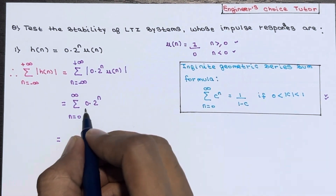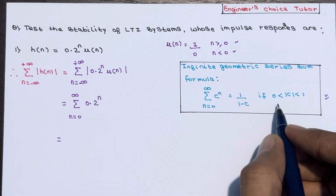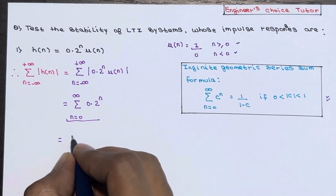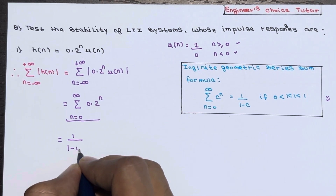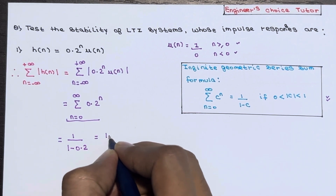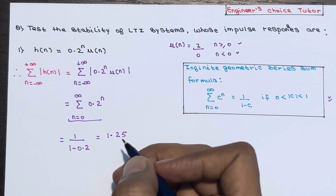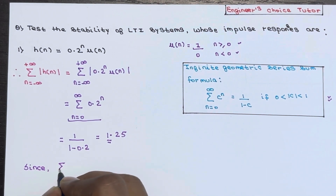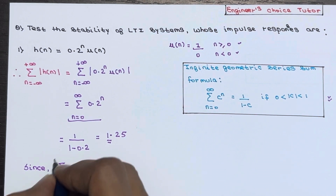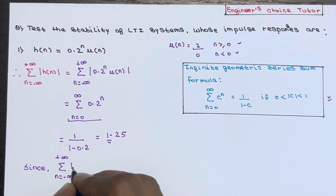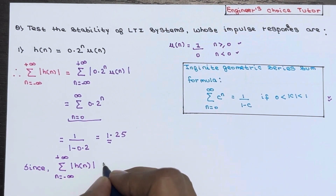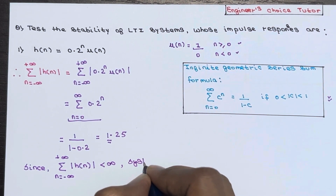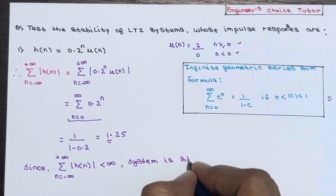Now apply the geometric series formula. In place of c, we have 0.2, and 0.2 lies between 0 and 1, so the formula applies. It becomes 1 divided by (1 minus 0.2), which equals 1.25 — a finite value. Since the summation of absolute value of h(n) from minus infinity to plus infinity is smaller than infinity, the system is stable.